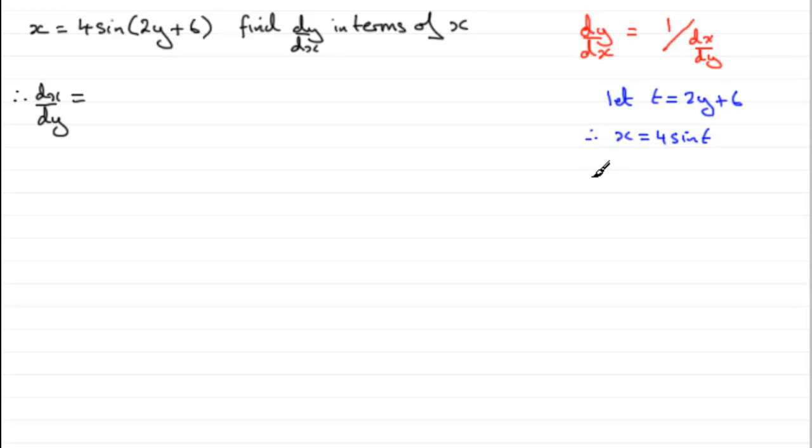Now we can use the chain rule to differentiate this. And the chain rule for this particular example is going to be that dx by dy is going to equal dx by dt multiplied by dt over dy. Now these dt's have got to be the same because it's as if they cancel out, leaving you with dx by dy.